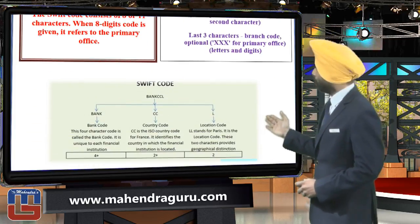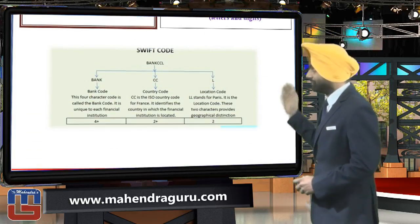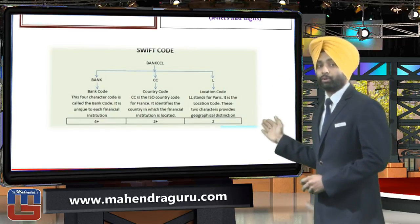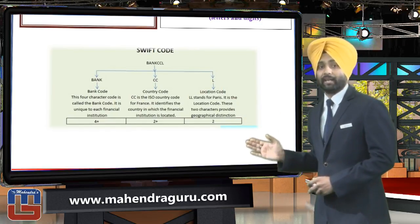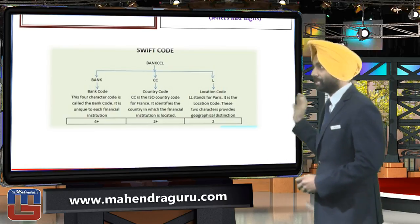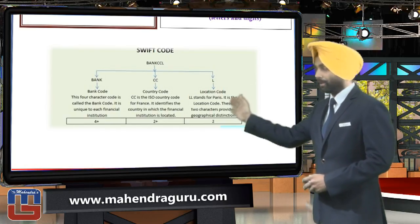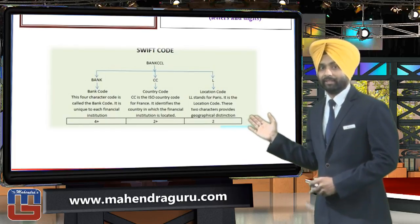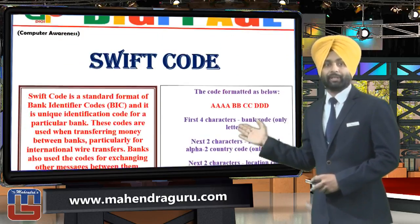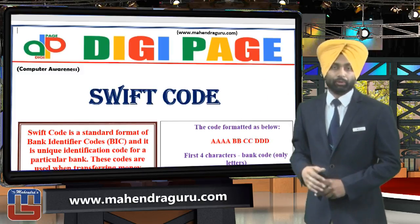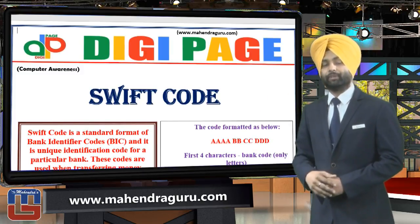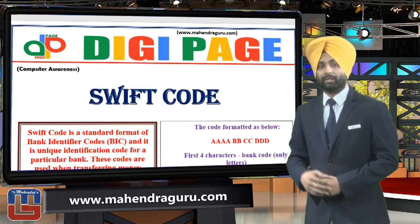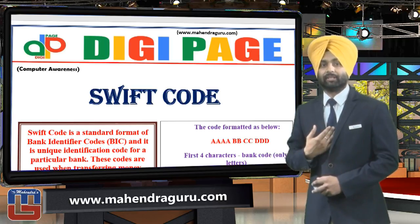Agar thoda niche aaye, toh hum log yahaan ek branching dekhenge jis mein bank code, country code, and location code ko alag alag tarike se branch kiya gaya hai. Bahut zaroori cheez hai yeh samajhna, jahaan par hum log isko bank, country, and location code ke naam se jaante hai. That was all for today with the topic Swift code. We assure you to provide such videos in future. Do post a comment on MahindraGuru.com. Your success is our success. Thank you.